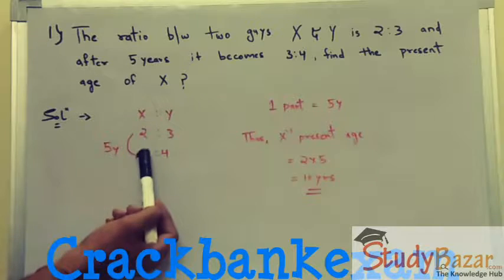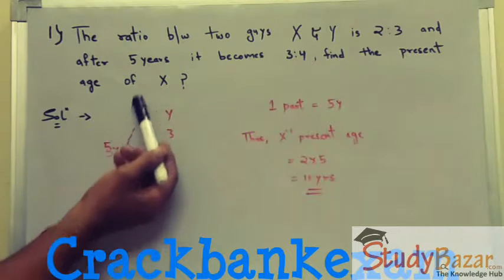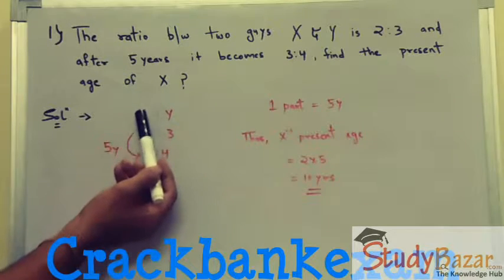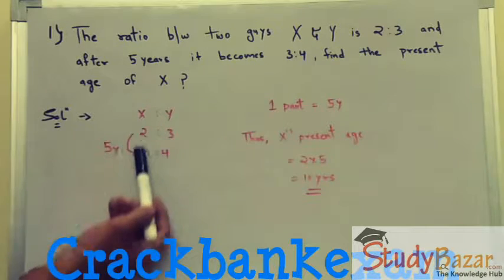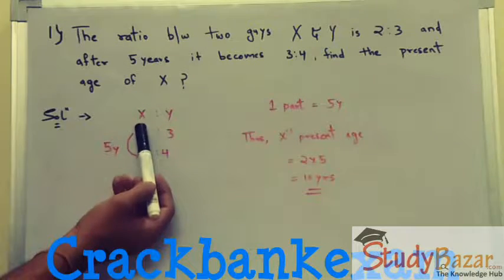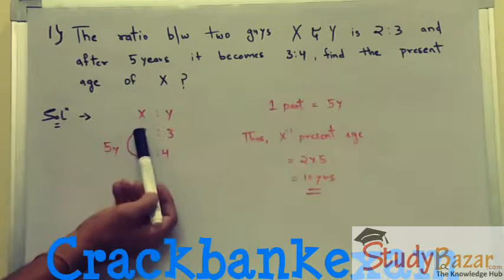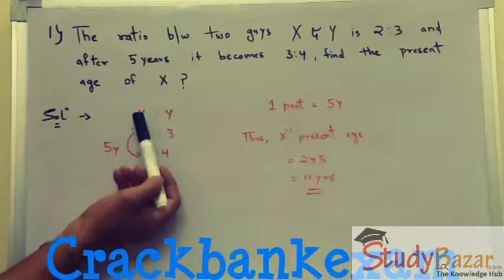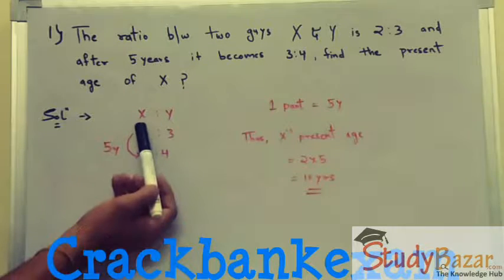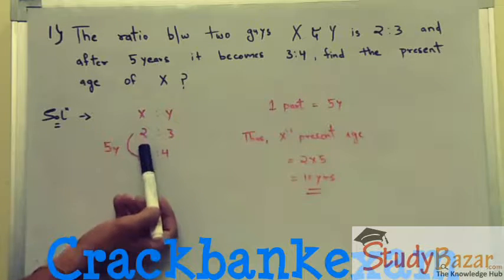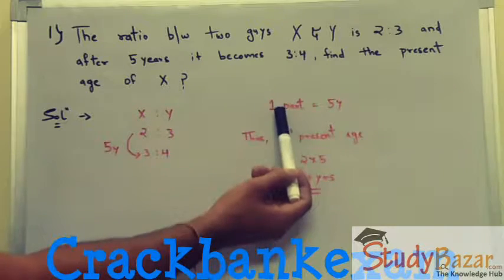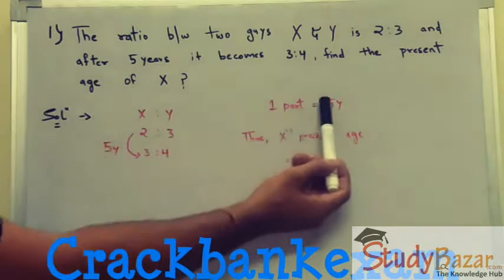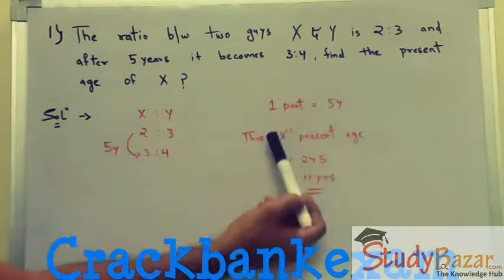It's given that X to Y ratio is 2:3, and after five years this ratio becomes 3:4. Now, as we have to find the present age of X, we are going to focus on X only. The difference between the present and future ratio of X is 3 minus 2, which is 1. This change happens in five years, so one part is equivalent to five years.